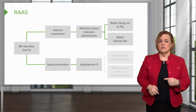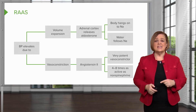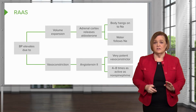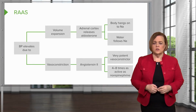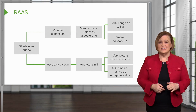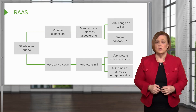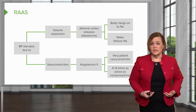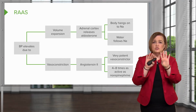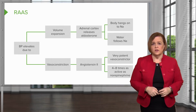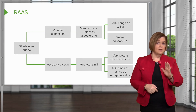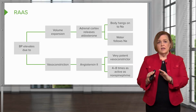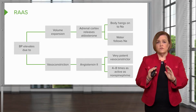The vasoconstriction that comes from angiotensin 2 is a very, very potent vasoconstrictor — like four to eight times as active as norepinephrine. Norepinephrine is a drug used in the critical care setting for someone with desperately life-threateningly low blood pressure. So this angiotensin 2, which the body itself is capable of making with the RAAS, is four to eight times as potent as norepinephrine. That's why it is a bad mamma jamma. The RAAS end products result in volume expansion and vasoconstriction.